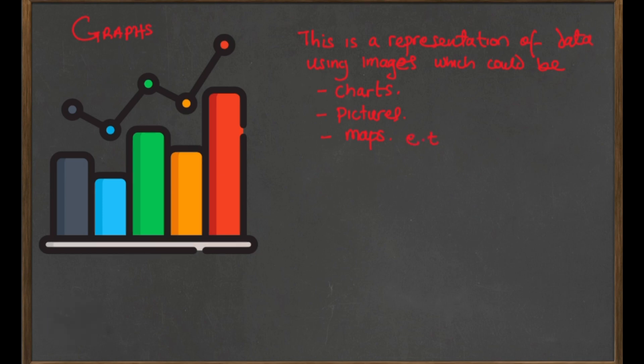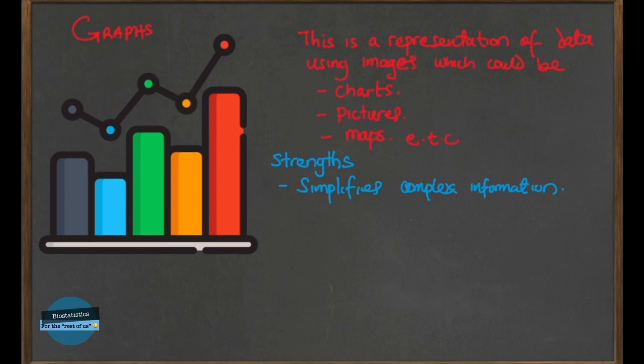Graphs have a particular strength — the major strength is that they help to simplify complex information. Don't draw a graph that is difficult to understand; if the information is confusing people, that is a very bad graph — put that information in your table instead. A graph actually helps to simplify very complex information by bringing out salient points and exposing them as an image that everybody can see and understand.